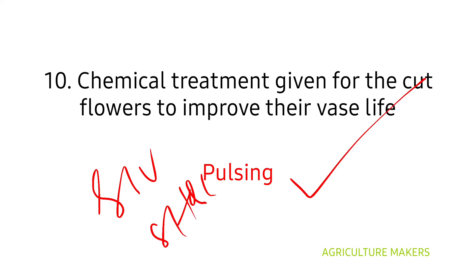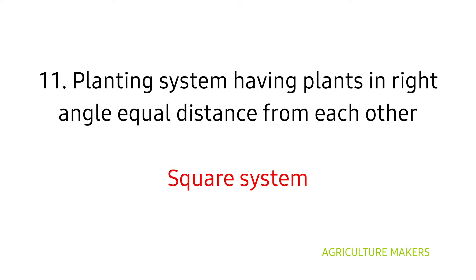All those pulsing-related questions are important from a mains point of view. The planting system having plants at right angles and equal distances from each other is called the square system. You have to read all those systems — namely rectangle, triangle, diagonal, and twin systems — and all the criteria needed to satisfy each condition.